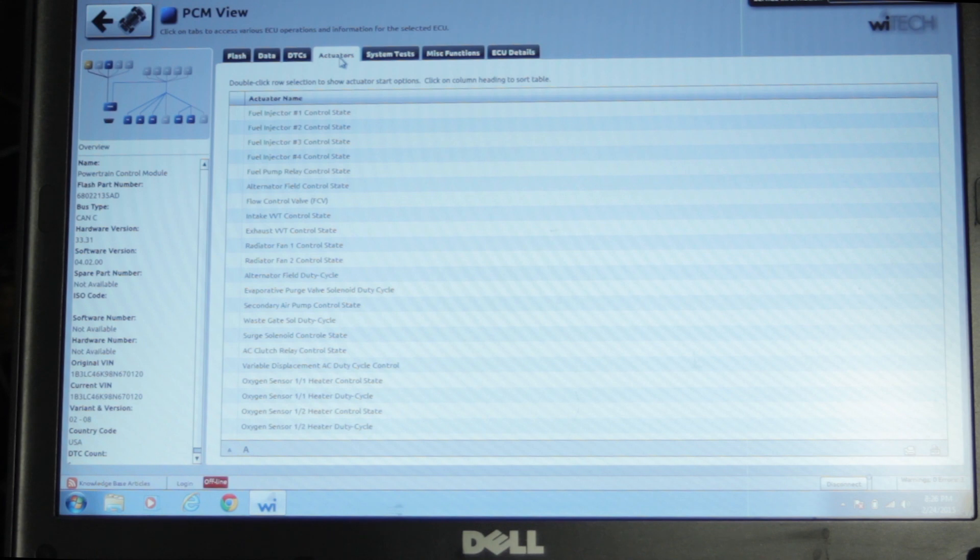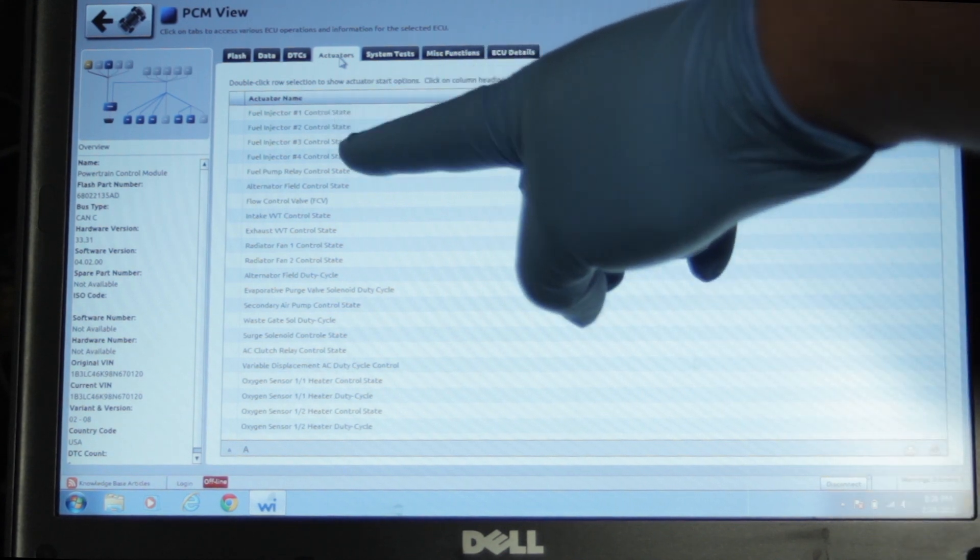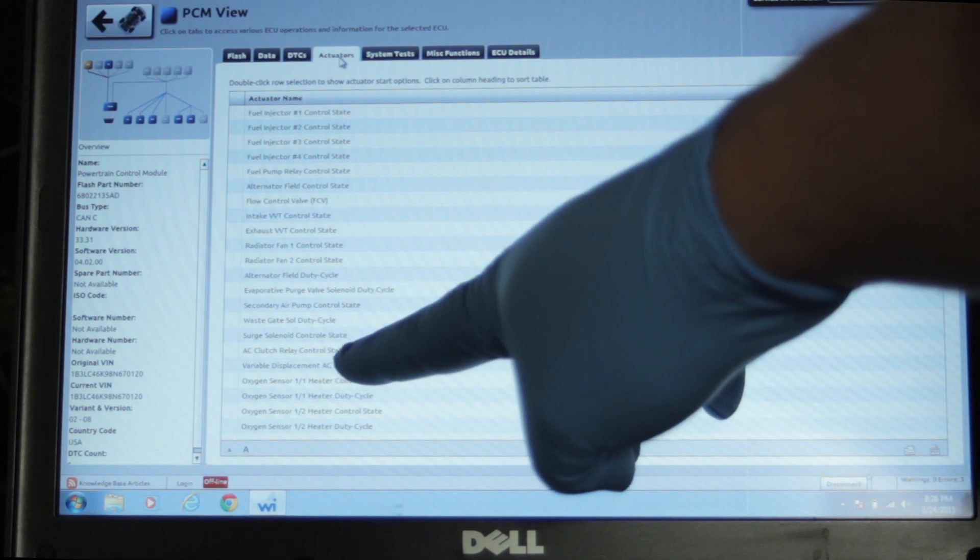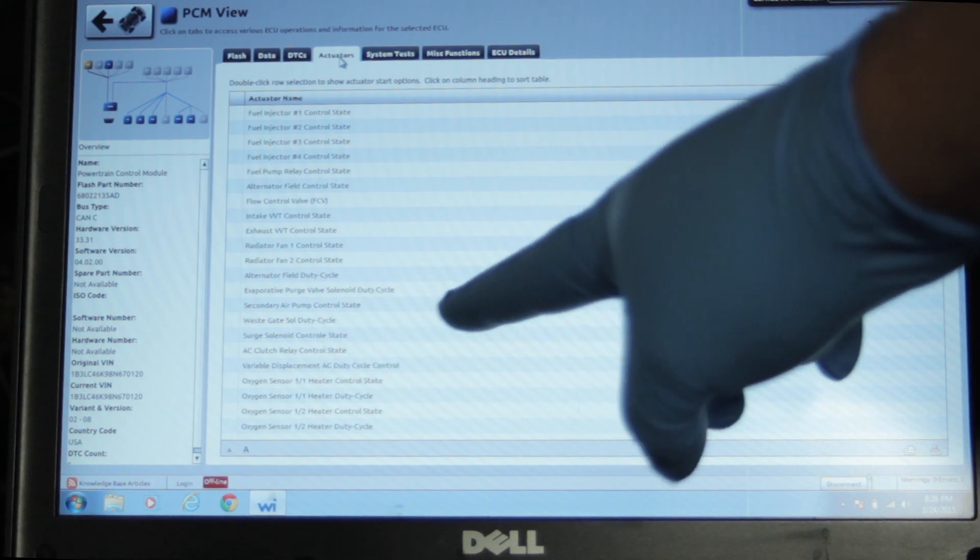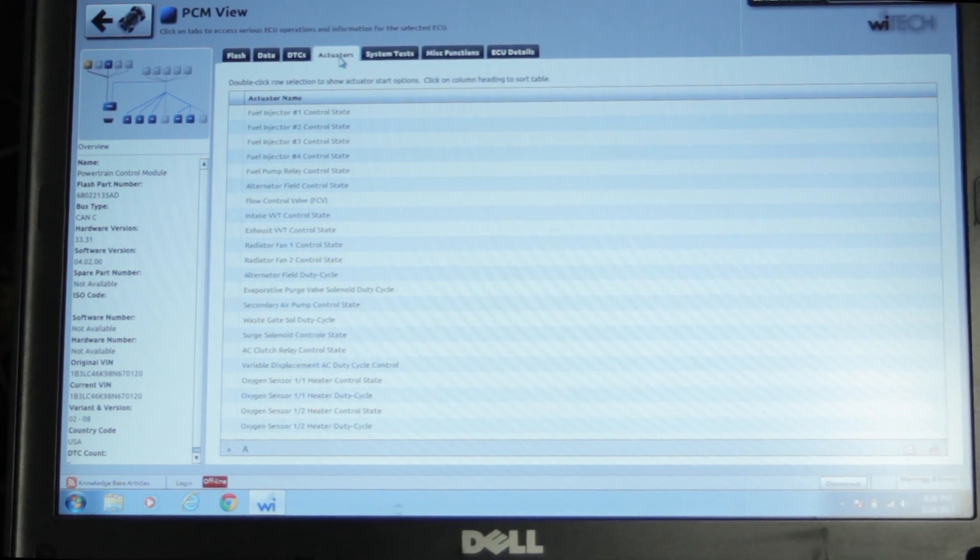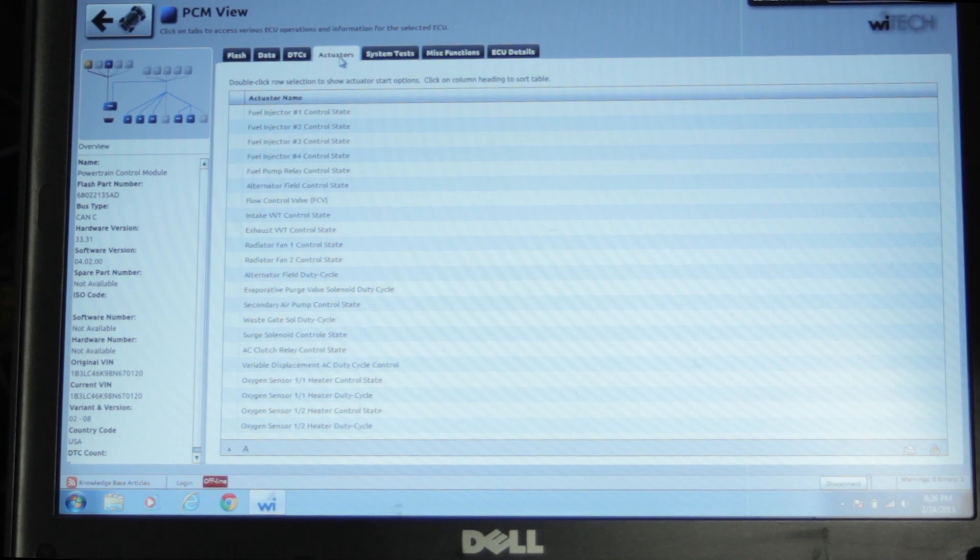So we're in the PCM view here, and we are going to look at the actuators. Now there's a huge list of different components of which we can actuate here, and there actually is an AC clutch relay control state. Now since there is no clutch on or off on this particular vehicle, basically this is an enable or disable type command here. And so this is going to allow the system to turn on or off, not necessarily turn that clutch on or off, because there is no clutch on this vehicle. So that's not going to help us in trying to diagnose one of these clutchless type systems.